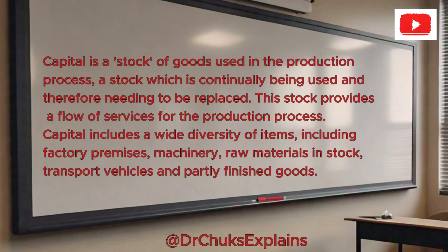This stock provides a flow of services for the production process. Capital includes a wide diversity of items, including factory premises, machinery, raw materials in stock, transport vehicles, and partly finished goods. As well as these, there is what is often called social capital, which refers to capital that is owned by the community such as schools and hospitals. There is also spending on the infrastructure, which is important to all businesses. The main components of this are transport, energy, water, and information. The transportation system is obviously very important to any economy.